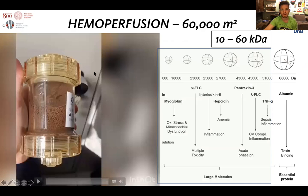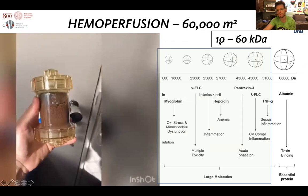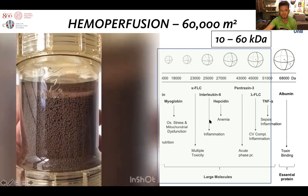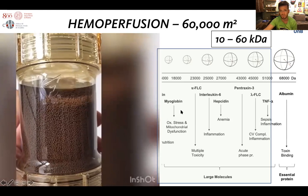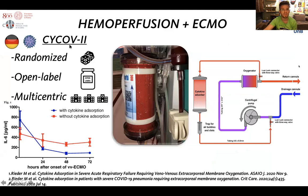This is the CytoSorb cartridge we are talking about. It contains microspheres — the beads — capable of removing molecules from 10 to 60 kilodaltons, which covers almost all pro-inflammatory molecules and cytokines. For instance, IL-6 has 21 kilodaltons, TNF-alpha has 51 kilodaltons, and others fall within this range. The surface area for adsorption in one cartridge is 5,000 square meters — equivalent to about 12 Maracanã stadiums.